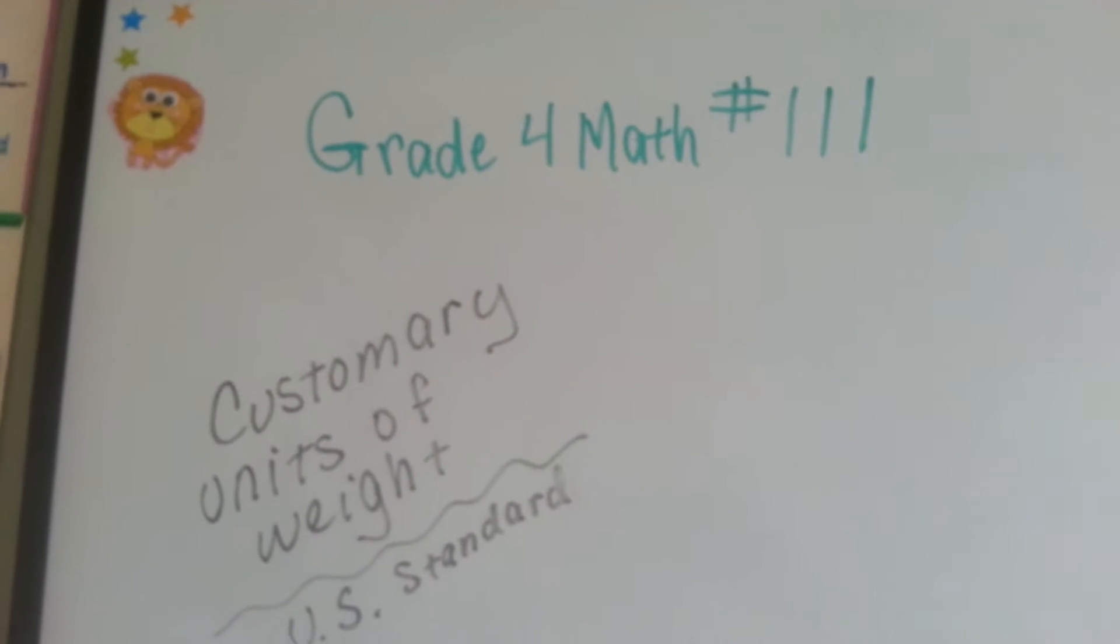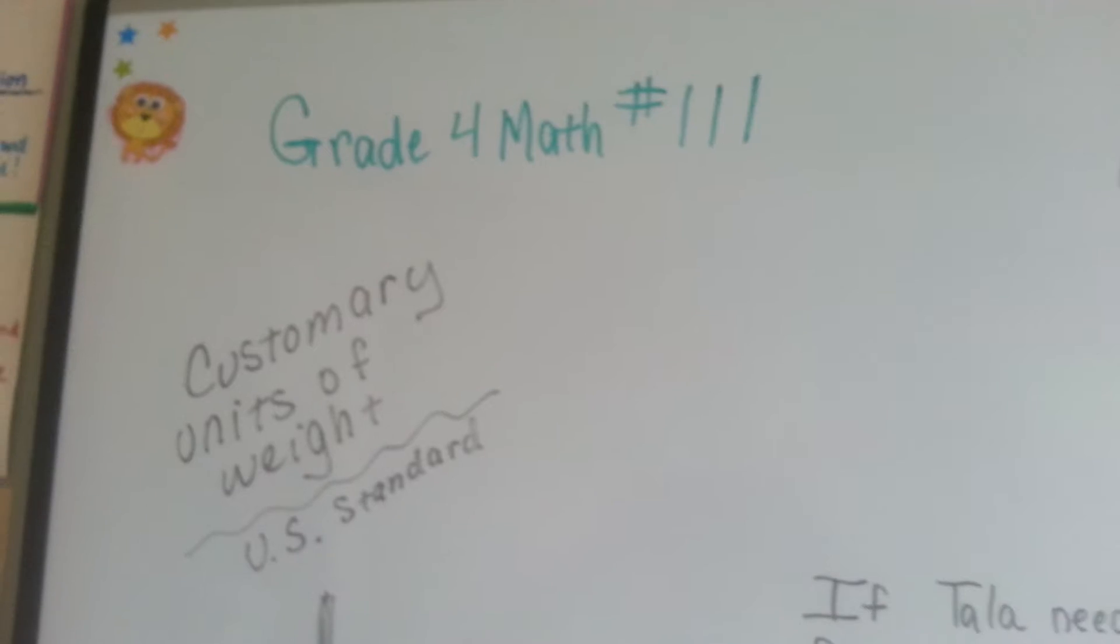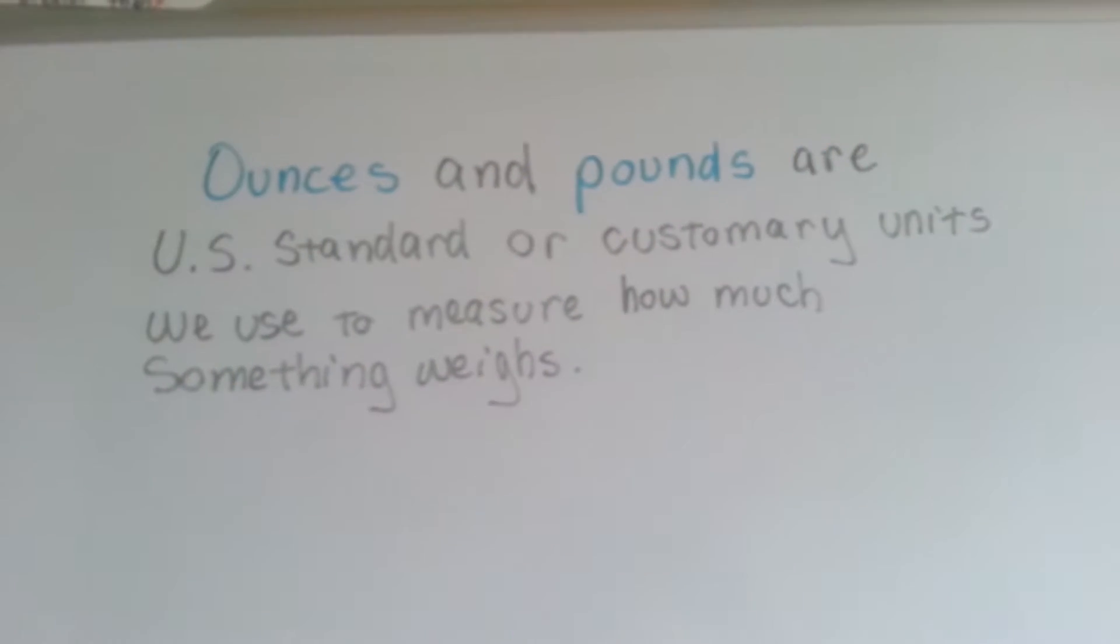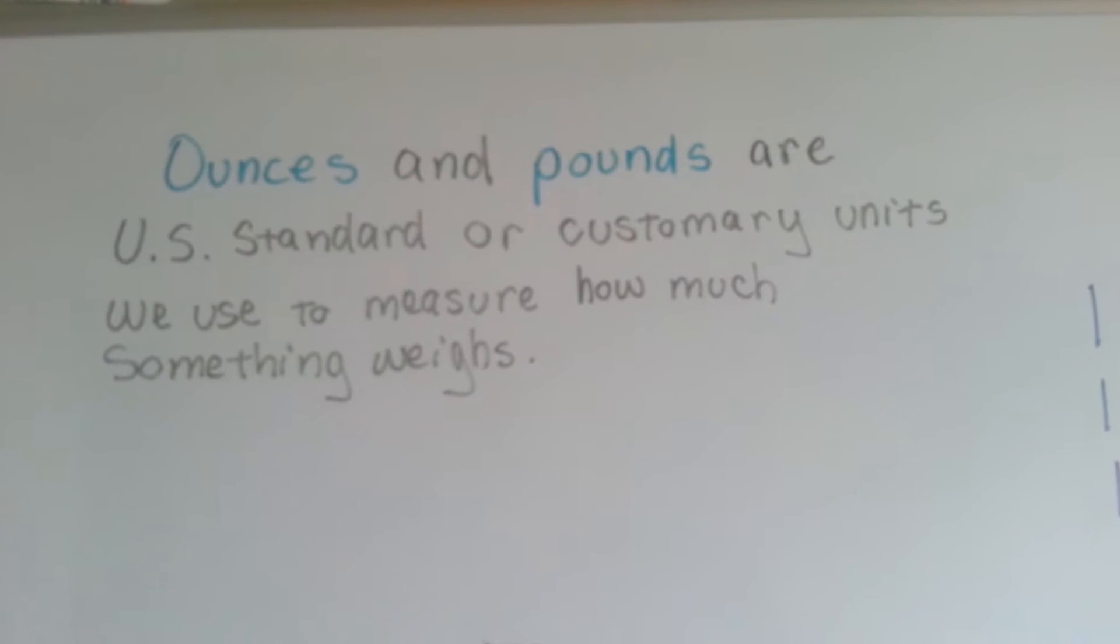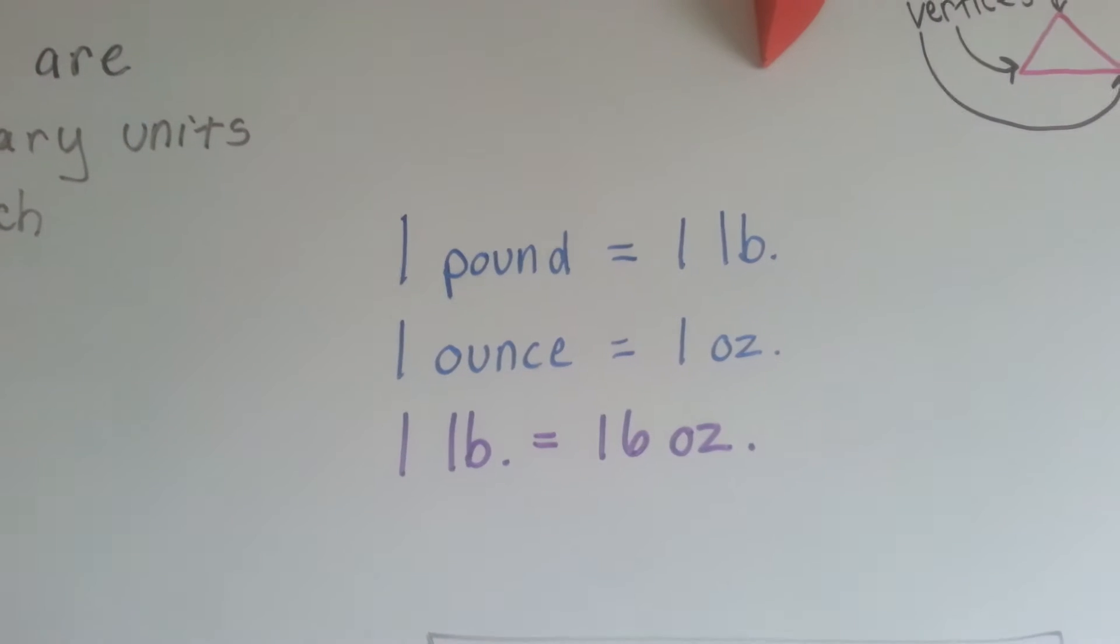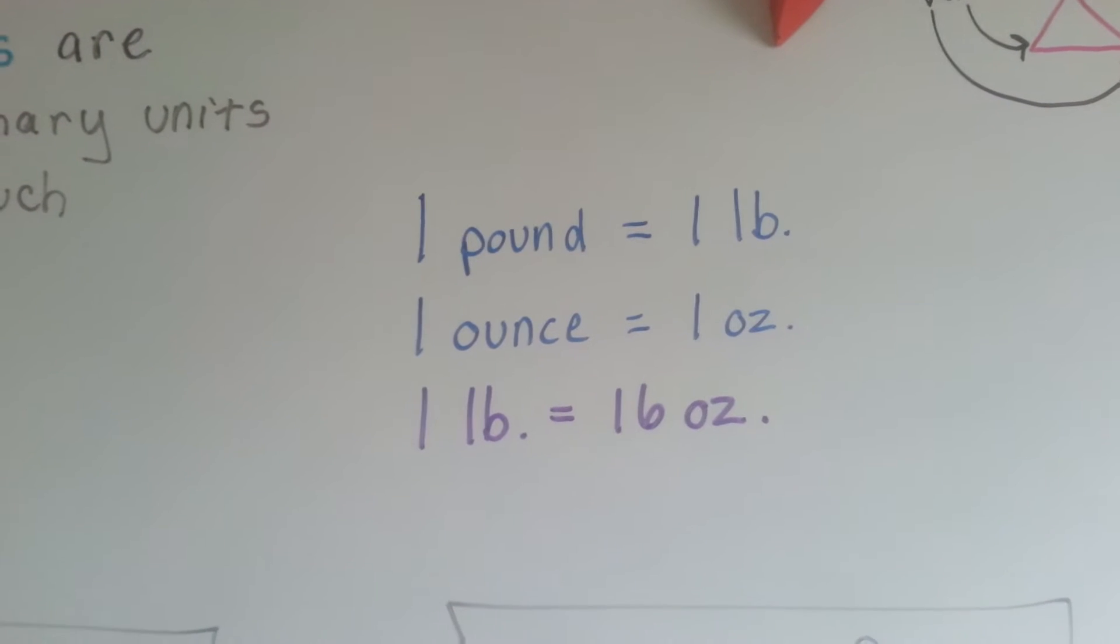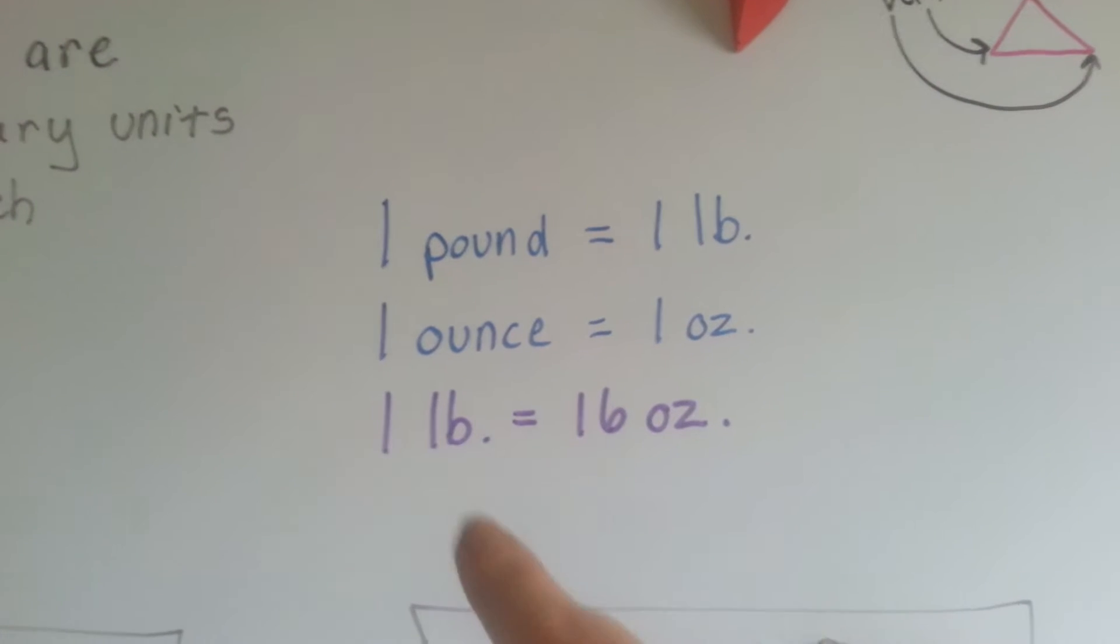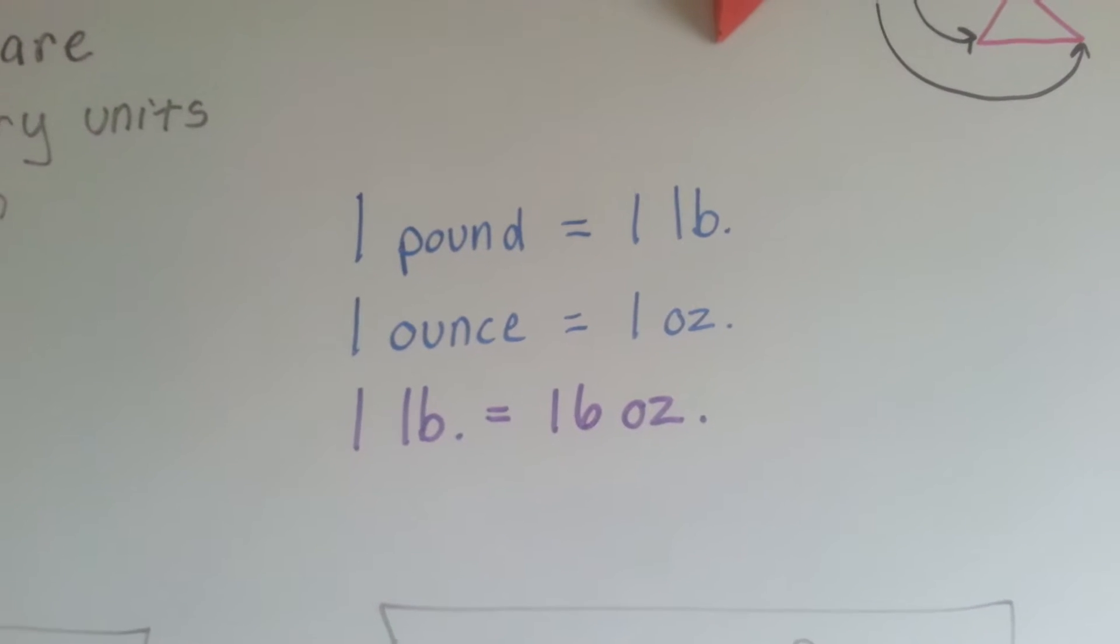Grade 4 math number 111, customary units of weight, U.S. standard. Ounces and pounds are U.S. standard or customary units we use to measure how much something weighs. A pound is abbreviated as LB, ounce is abbreviated as OZ. One pound is equal to 16 ounces.